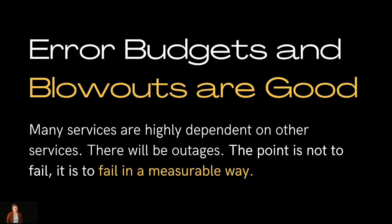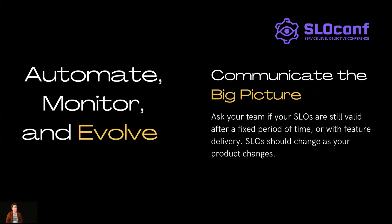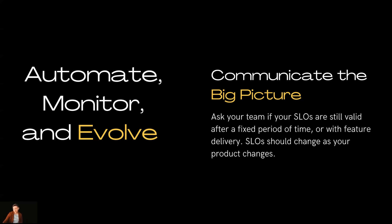Culturally speaking, error budgets and error budget blowouts are good — they're okay. Services are highly dependent not only on your own microservices but those external to yours. There's going to be maintenance, outages, and updates from other systems that impact your availability. The point in SRE is not to never fail; it's just to fail in a measurable way. When you do that, you can communicate the big picture and ask your team if your SLOs are still valid. Are there places in your architecture where you're seeing your error budget blow out? If there's no real customer impact, you can consider relaxing that SLO — putting less developer time on problems that don't impact your users and shifting it to the ones that really do.